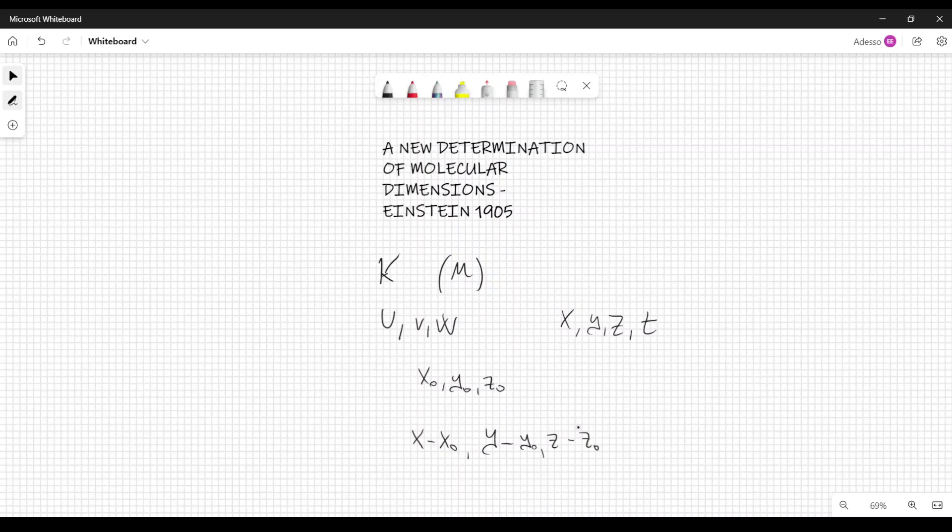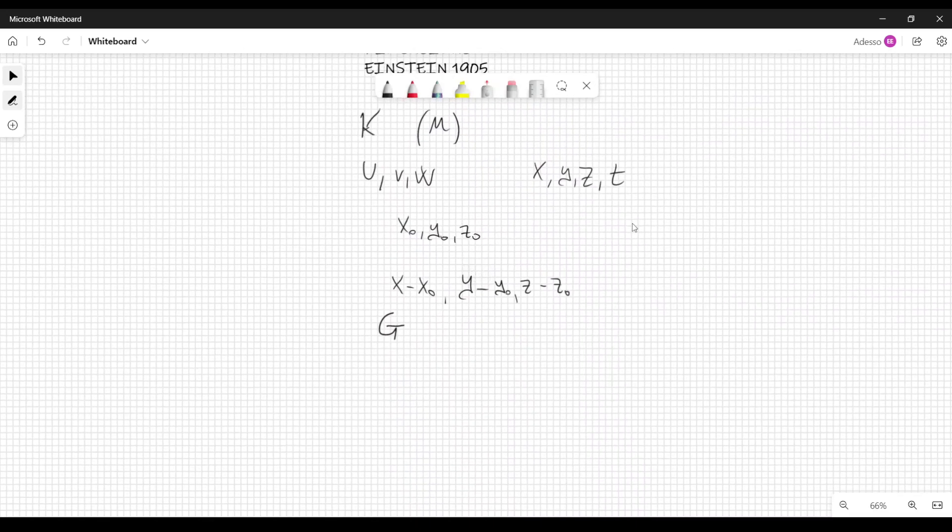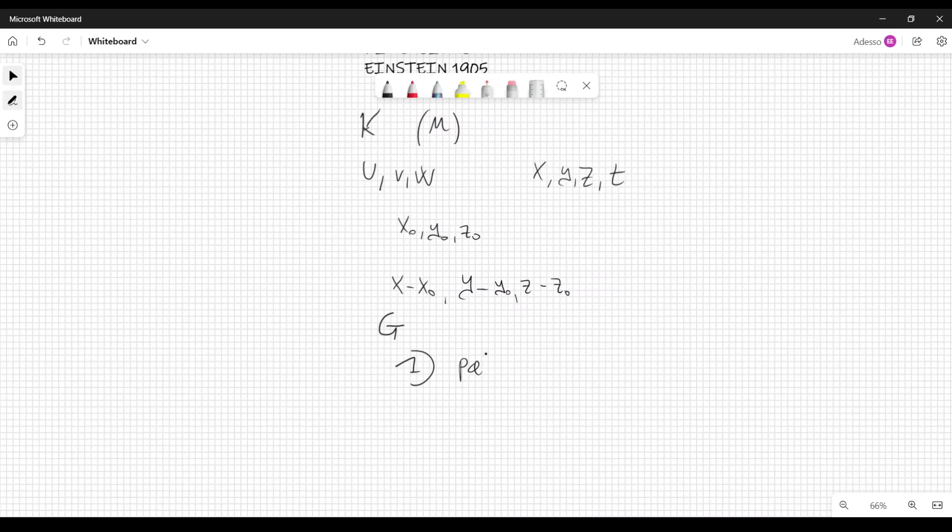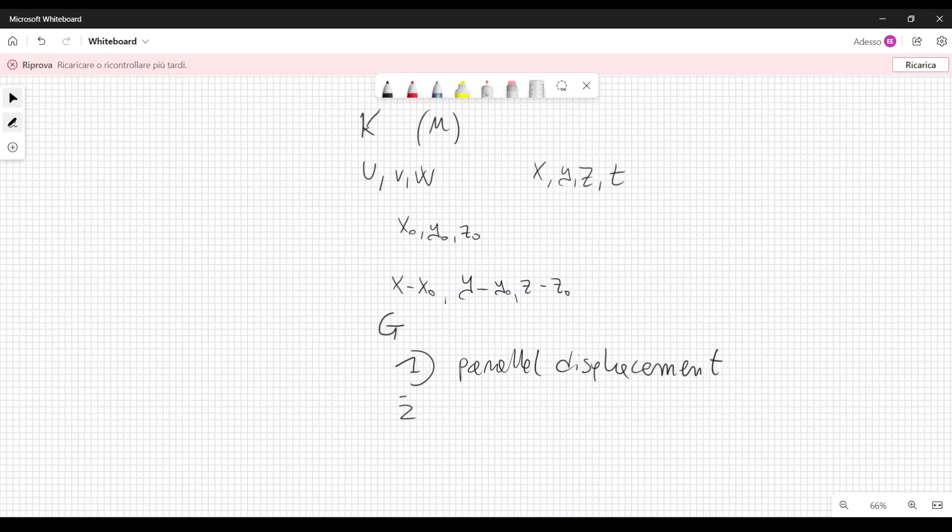The motion of the liquid contained in a small region, let's call it capital G, just like Einstein did. The motion of the liquid, this region contains the point x0, y0, z0, and the motion of the liquid can be thought of as a superposition of three motions. One, the first motion is parallel displacement of all liquid particles without the change in their relative positions.